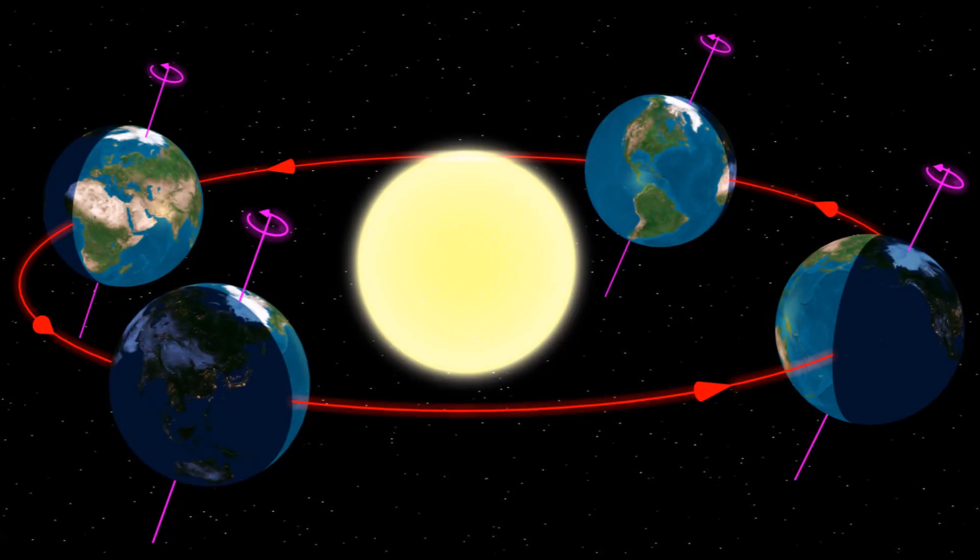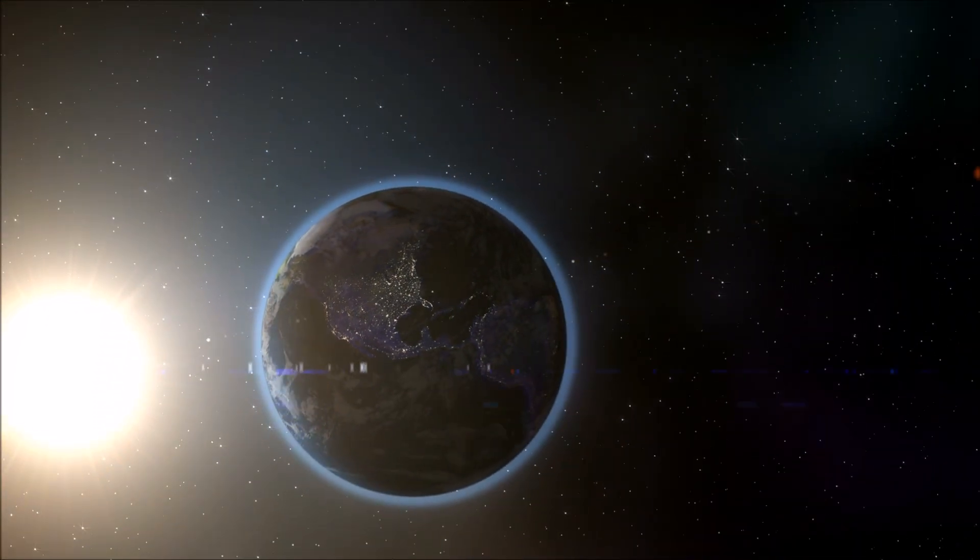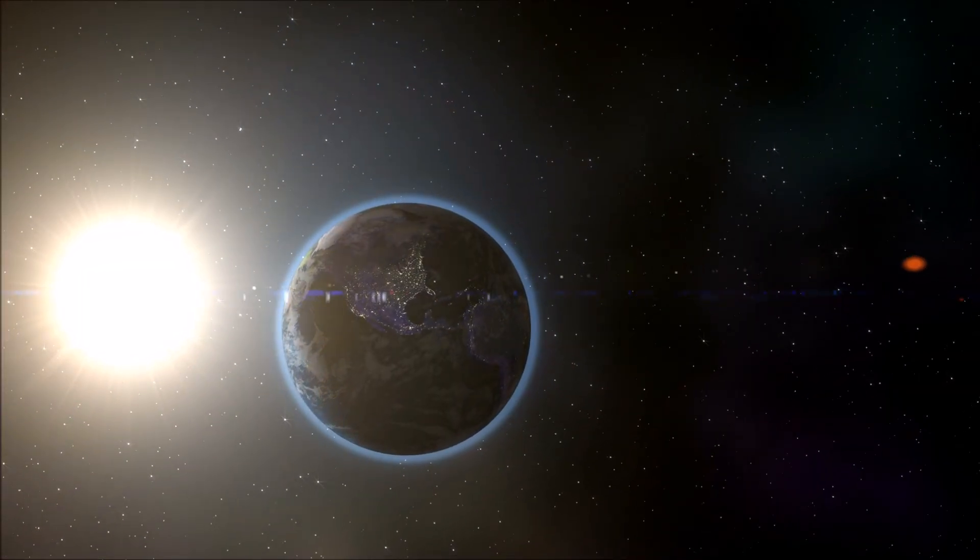Equinoxes are directly related to the changing of the seasons. The vernal equinox in March marks the beginning of spring in the Northern Hemisphere and the beginning of autumn in the Southern Hemisphere.